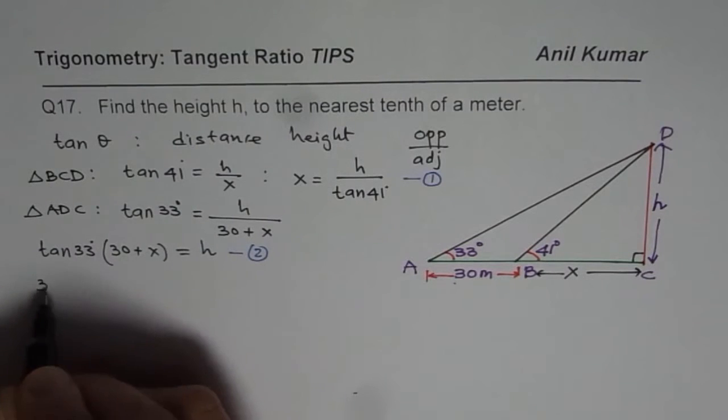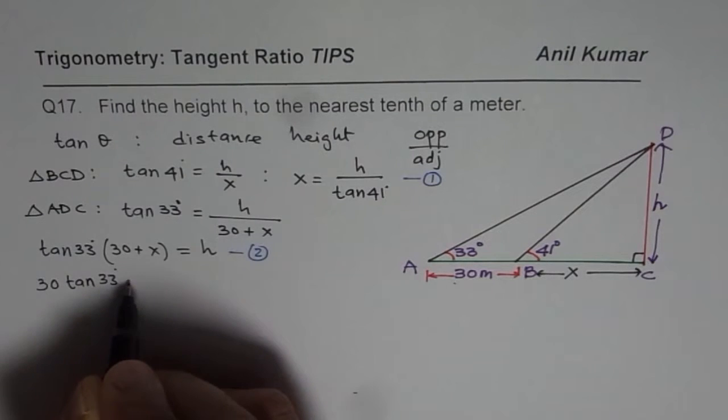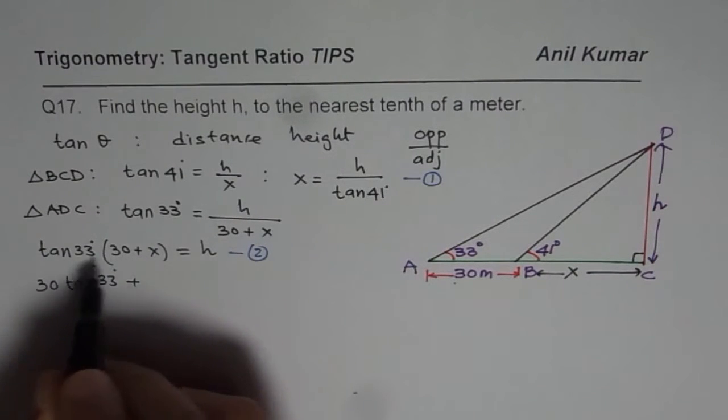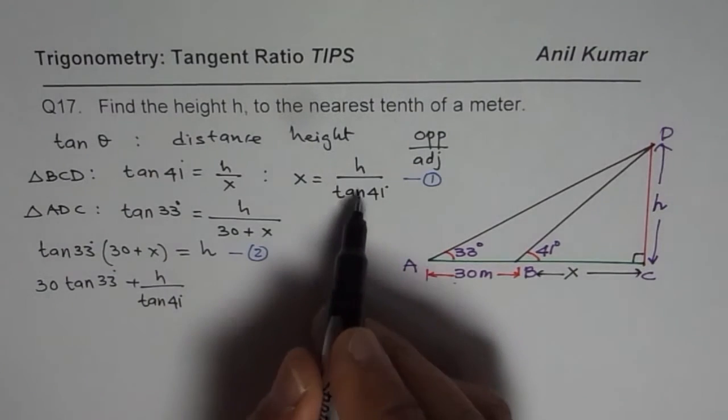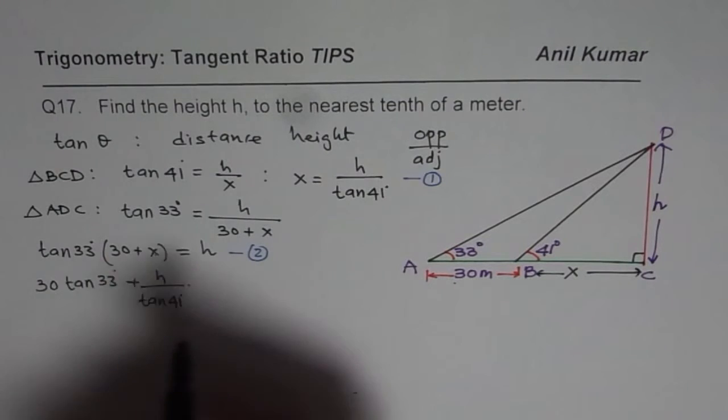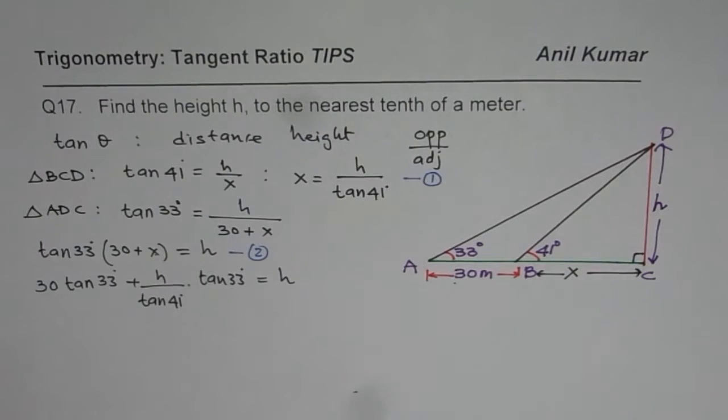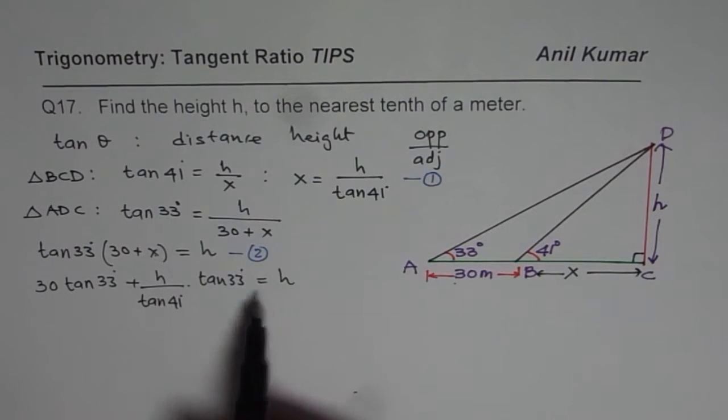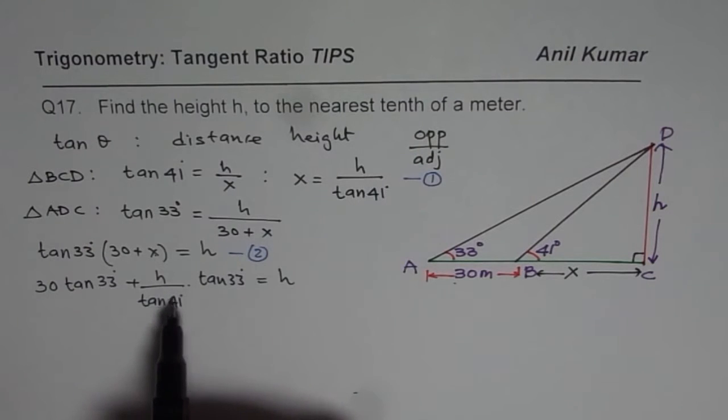Let me write this as 30 times tan 33° plus x times tan 33°. Instead of x times tan 33° I will write (h/tan 41°) times tan 33°. So instead of x I am writing (h/tan 41°) times tan 33°, which equals h. I am going in for a very general solution. It may look complicated but it is more helpful.